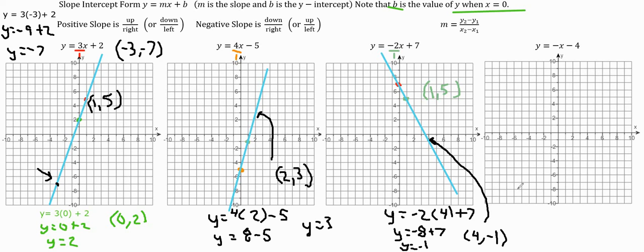This last one, y equals negative x minus 4. There's a number in front of x even though we don't see it—it's negative 1. So we could rewrite this as y equals negative 1x minus 4. Let's start at the y-intercept, which is negative 4. We go down 4 and put a dot there. Our slope is negative 1, which is negative 1 over 1. From our first dot, we go down 1 and right 1 because we have negative slope. Then we draw a straight line to connect it. I'm not going to check it algebraically. If you have any questions, ask your math teacher.